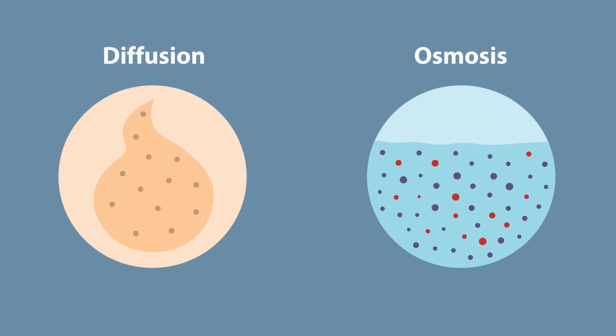In the first part of this video, we looked at diffusion for the movement of gases and osmosis for the movement of water. They were things that could easily move from a high concentration to a low concentration. That makes sense.